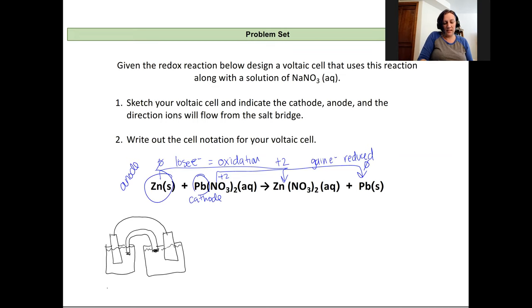So I'm going to make this my anode on the left and I'll make the one on the right my cathode. My anode is where oxidation takes place. So this metal electrode will be my zinc electrode and the one on the right will be my lead electrode.